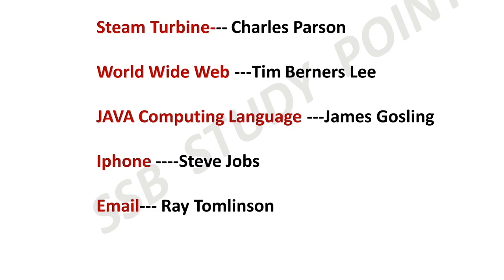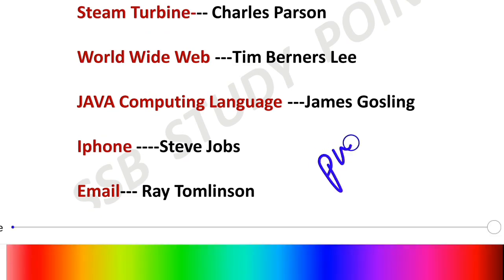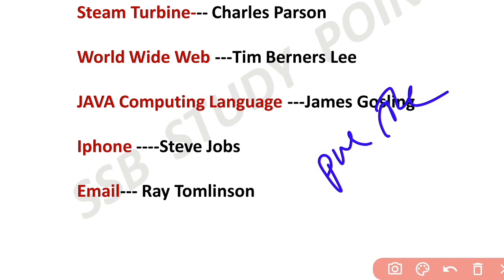The iPhone is associated with Steve Jobs. Email was invented by Ray Tomlinson. These are the most important previous year invention and discovery related questions. The PDF is available on the Telegram channel — the link is in the description box. Hope this was helpful — thank you so much, take care, bye bye.